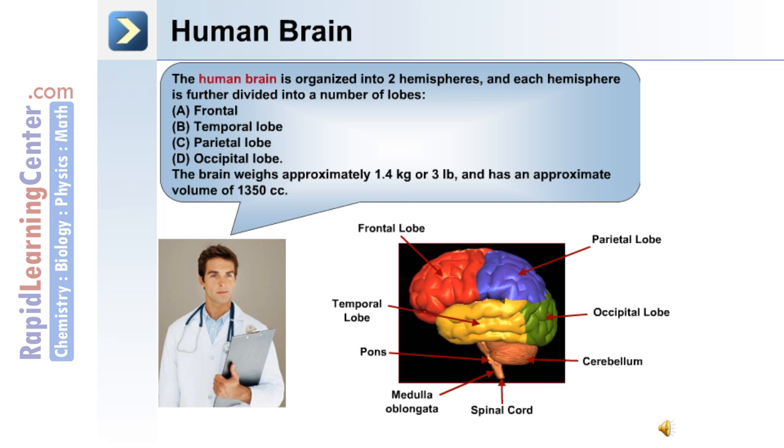The human brain is organized into two hemispheres and each hemisphere is further divided into these lobes. The brain itself weighs approximately 1.4 kilograms or three pounds, and its approximate volume is 1350 cc.